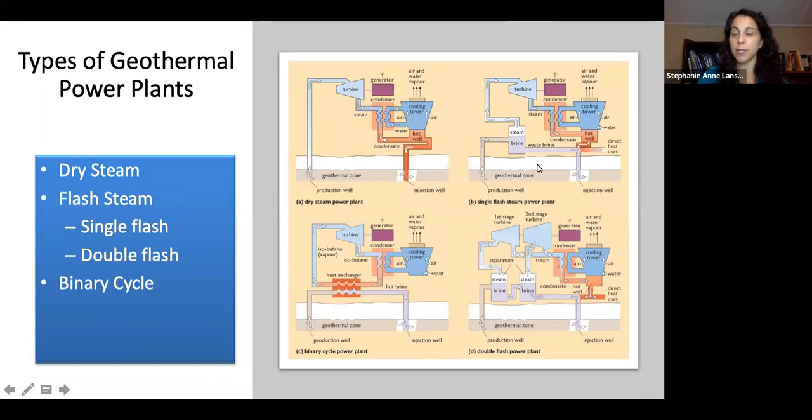In a single flash steam power plant, as pressure releases, steam is released and goes through the turbine. The brine comes down and goes back through the injection well. We have a cooling tower and can use some water with heat directly. With a binary cycle, the brine stays in one loop. We use a heat exchanger and isobutane for the steam vapor instead of water vapor, with a cooling tower and injection well.